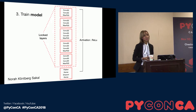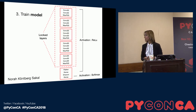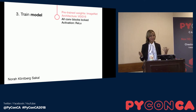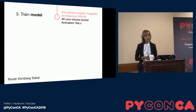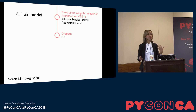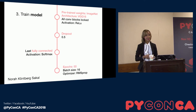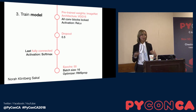For activation, I used a nonlinear function called ReLU, because so far the network has only been using linear operations, and the very last activation was softmax. Summarizing the training phase: pre-trained weights from ImageNet, the VGG16 architecture, nonlinear activations, a dropout rate of 0.5 to help the model generalize better, softmax on the last fully connected layer, and I ran this for 50 epochs with 16 images at a time.